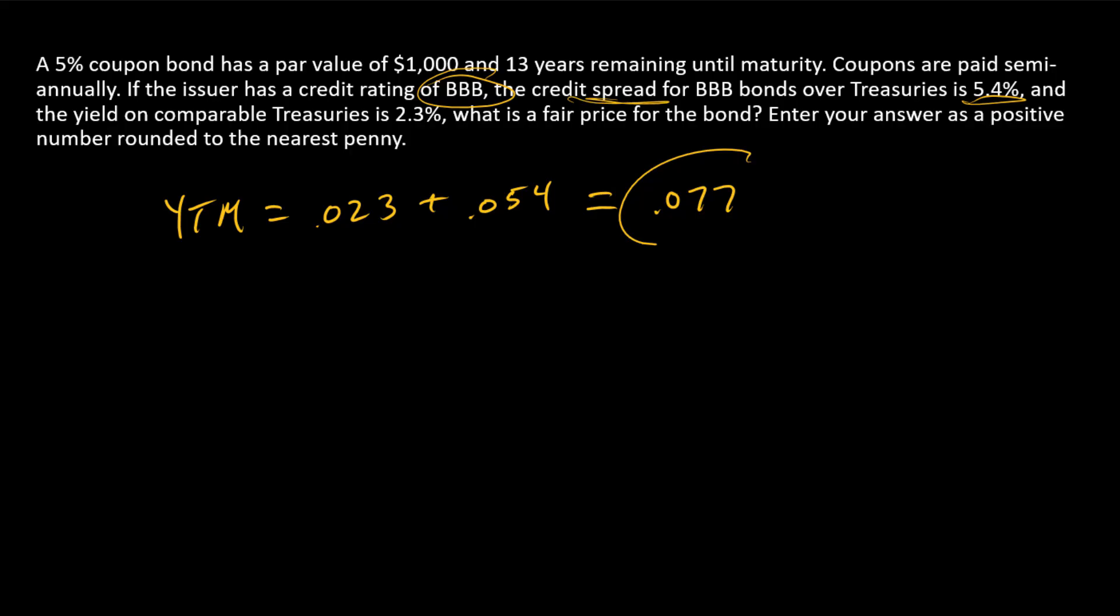So that's the yield to maturity that we're going to use. Of course, that's an annual number, and so we're going to have to convert that to a semi-annual value. And so we'll just divide by 2 for our calculations.